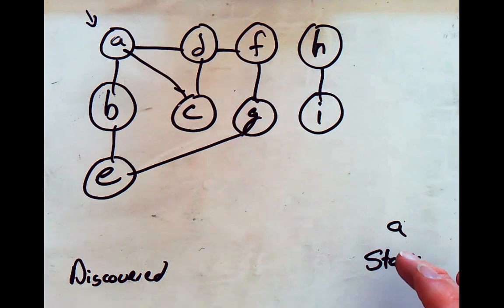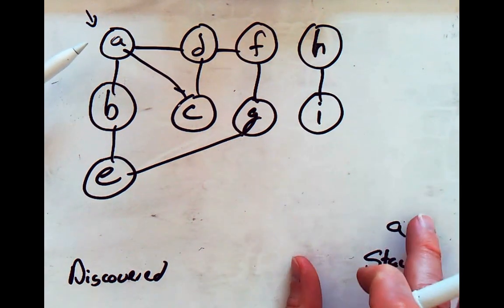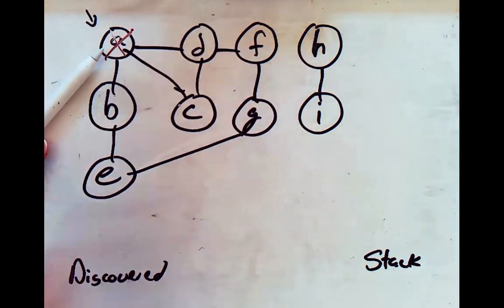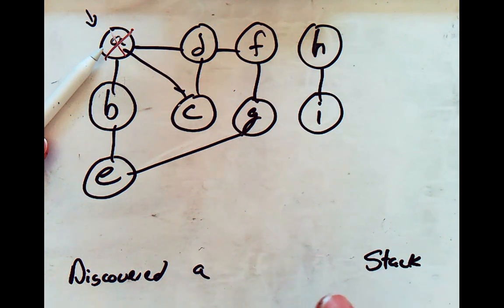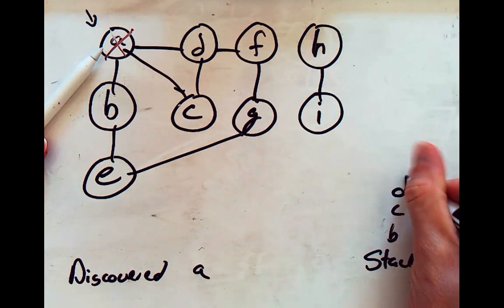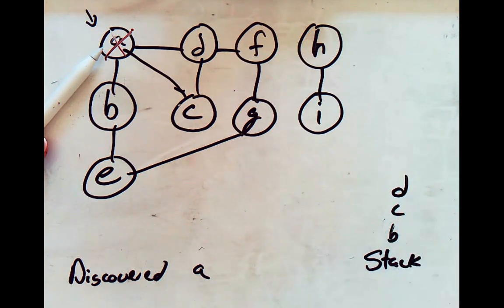At each step of the while loop, we pop a node from the stack. So I'm going to pop A off the stack. It hasn't been discovered, so we mark it as discovered, cross it off, and add it to the discovered list. Then we look at all edges to adjacent vertices and push them all onto the stack — it's connected to D, C, and B, so B, C, D get pushed. The order isn't particular; that's defined by the implementation of your graph.